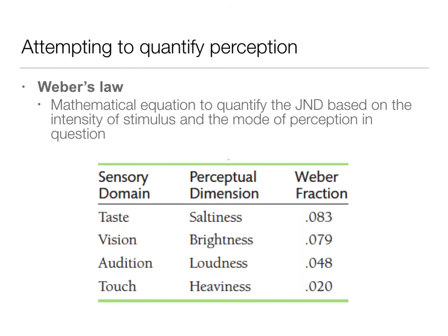We've talked about perception. Clearly, we are science, so we like to measure things, and there have been various attempts to really quantify perception. One of the first major attempts was Weber's Law, which is a mathematical equation that tries to quantify that just noticeable difference based on the intensity of the stimulus.